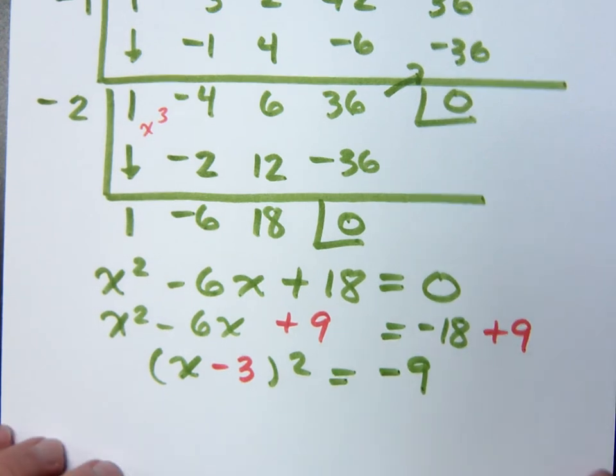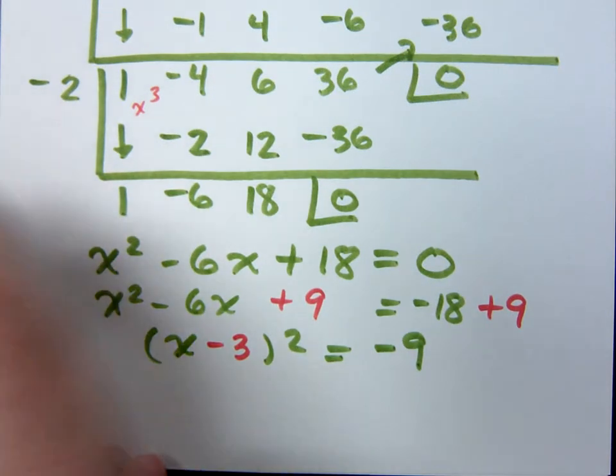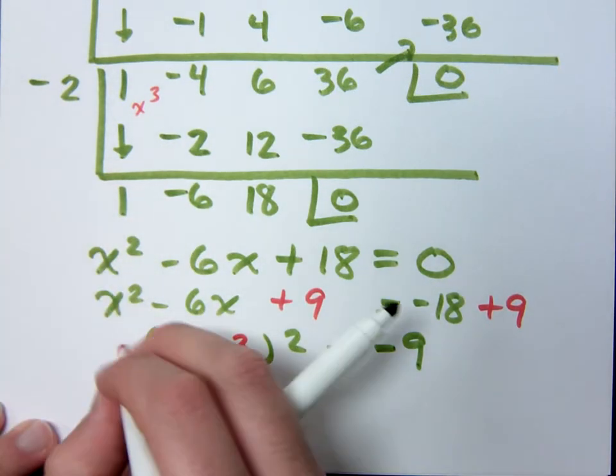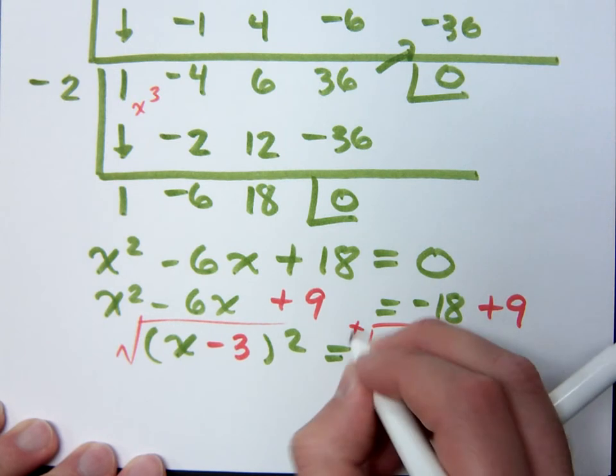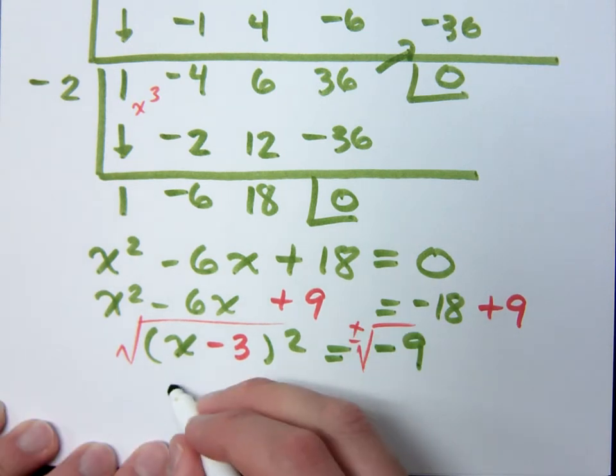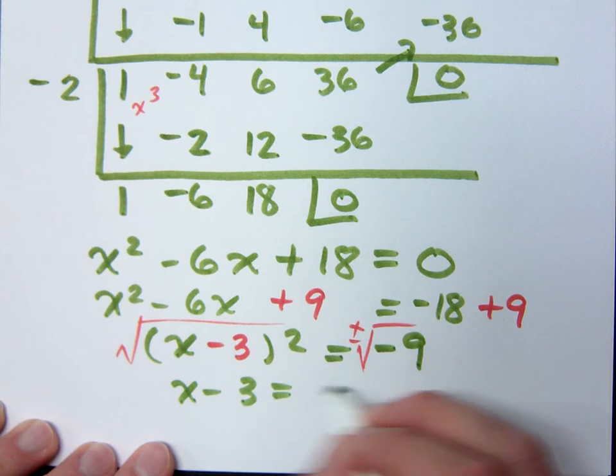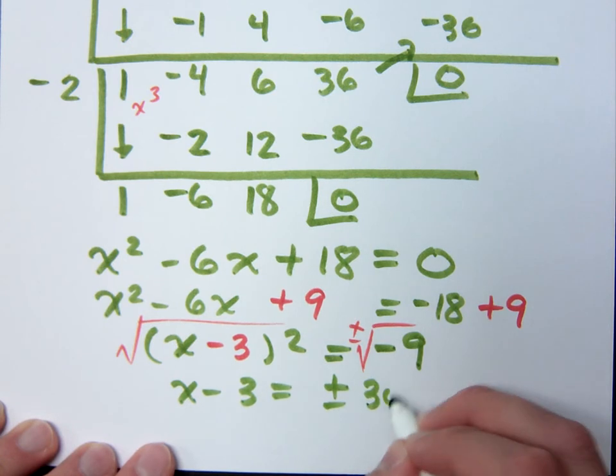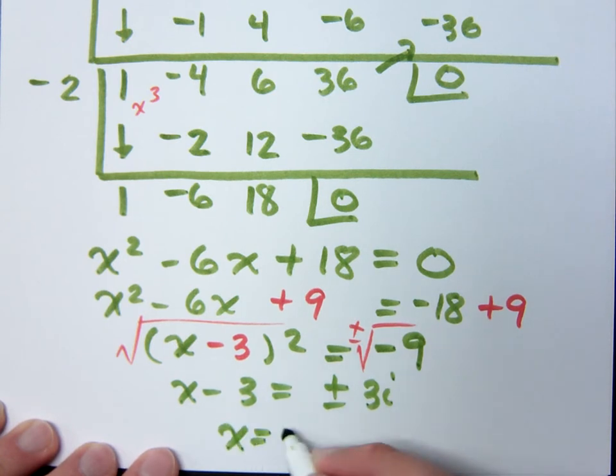Negative 18 plus 9 is negative 9. Then what do you do? x minus 3 equals plus or minus, that's right, 3i. So what does x equal? 3 plus or minus 3i.